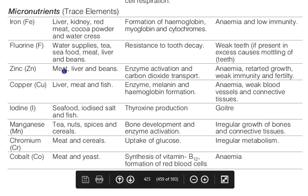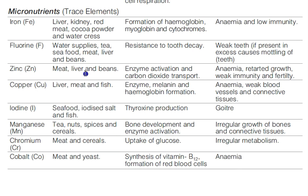Zinc is found in meat, liver, and beans. It is important for enzyme activation and carbon dioxide transport. Deficiency leads to weak immunity and reduced fertility. Copper deficiency means melanin is not produced, causing weak blood vessels and connective tissues, as well as anemia.